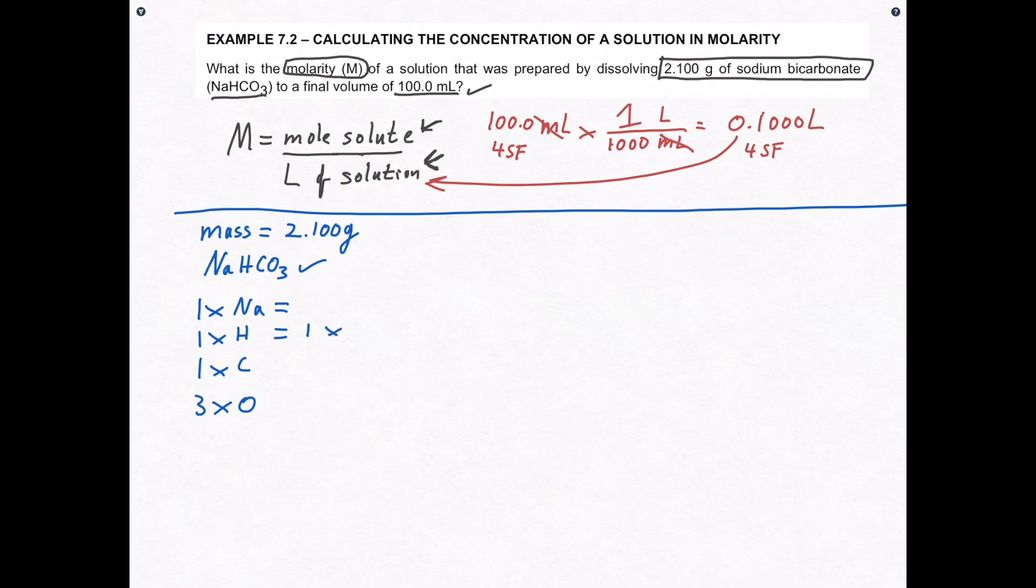Hydrogen I do know, 1 times 1.01 grams per mole. Carbon I also know, 1 times 12.01 grams per mole. And oxygen I know, 3 times 16.00 grams per mole.